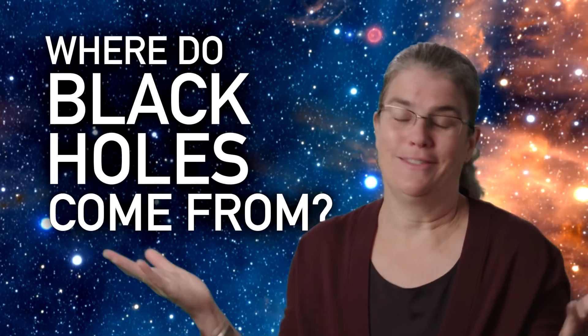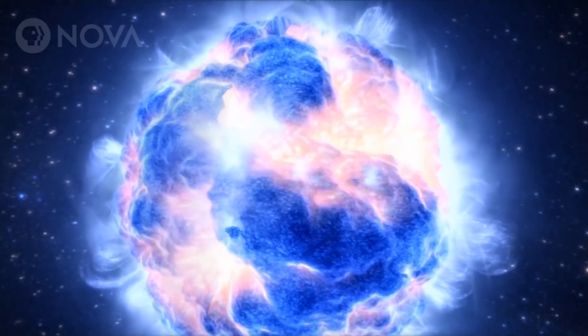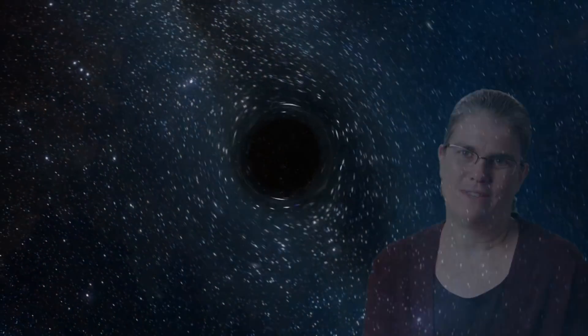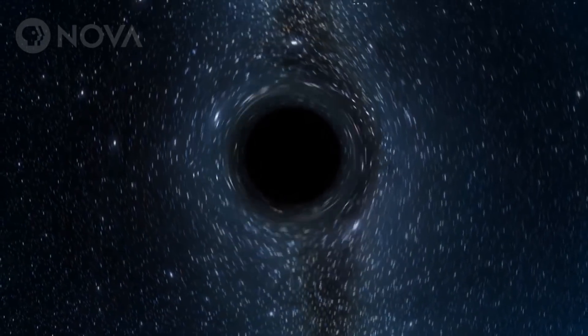So stars have a life cycle. They're born, they live, and then the most massive stars end up as black holes. They are defined by their immense amounts of gravity. Gravity is so intense that nothing can escape them, not even light.